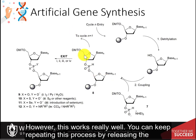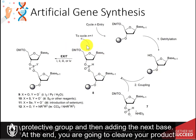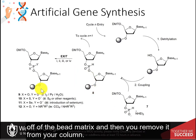However, this works really well. You can keep repeating this process by releasing the protective group and then adding the next base. At the end, you cleave your product off of the bead matrix and remove it from your column.